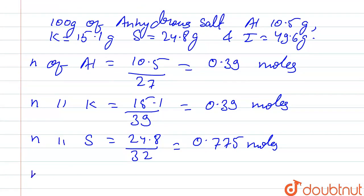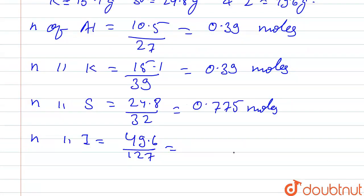Number of moles of sulfur: 24.8 divided by 32 equals 0.775 moles. Number of moles of iodine: 49.6 divided by 127 equals 0.39 moles.